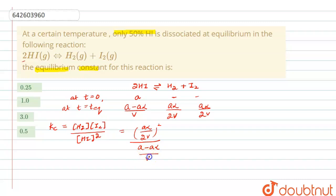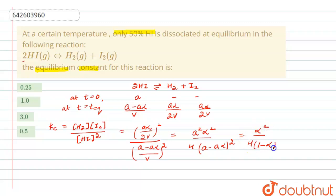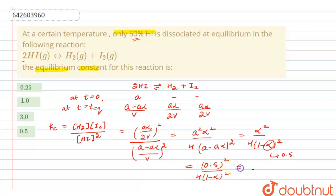Solving further: it becomes a²α²/4 divided by (a − aα)². Taking out a² common, it simplifies to α²/4(1 − α)². The value of α is 0.5, since 50% dissociated. Substituting 0.5: (0.5)²/4(1 − 0.5)² = 0.25. So the correct answer is option A.